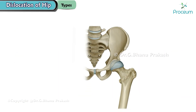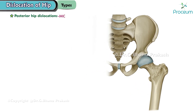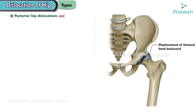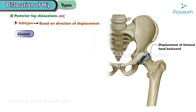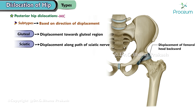The second type is posterior hip dislocations, which are more common and involve displacement of the femoral head backward, towards the back of the body. Like anterior dislocations, there are subtypes: gluteal dislocations involve displacement towards the gluteal region, sciatic dislocations involve displacement along the path of the sciatic nerve, and iliac dislocations involve displacement towards the ilium.